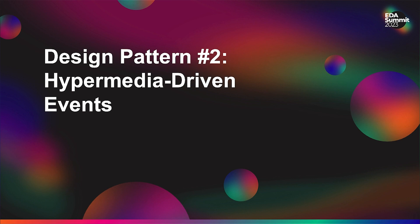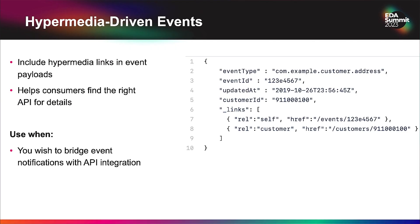One thing we can do to extend a thin event is to add hypermedia. We might include hypermedia links to inform the event consumer what the API operation is and the specific URL to fetch those details. We could offer details about the event itself and how to fetch the event representation later — for example, pointing to a customer resource when a customer address changes. Bringing hypermedia into our events gives us a lot of power and helps bridge event notifications with existing APIs.